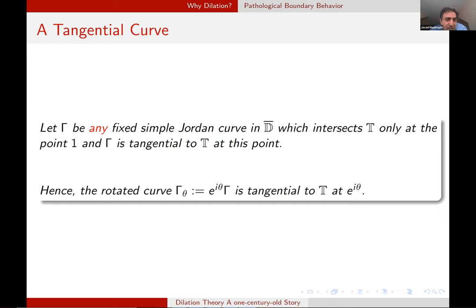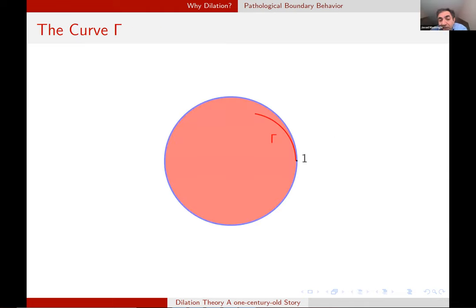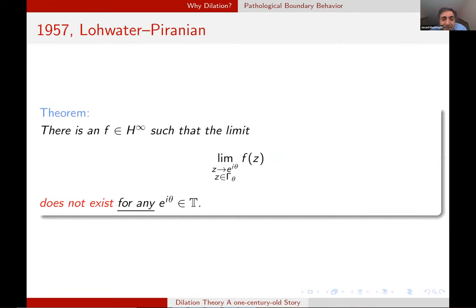Dan Frostman. For the next result, consider any Jordan curve inside D which intersect T just at one point and then rotate it by theta, call it gamma theta. Here is a picture. It can be any curve which is tangential to the point one and then we rotate it. And the result by Lohwater and Piranian says that there is a bounded function such that the limit of F does not exist for all, for any point on the boundary. But if we go to the boundary on that curve. And note that at the same time, by Fatou theorem, the radial limit exists almost everywhere. So the way we go to the boundary is important.